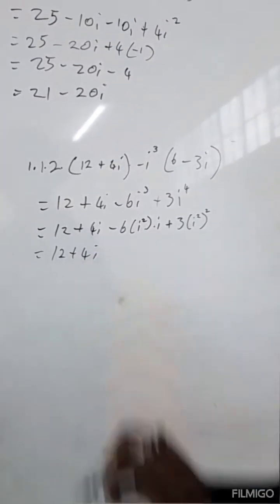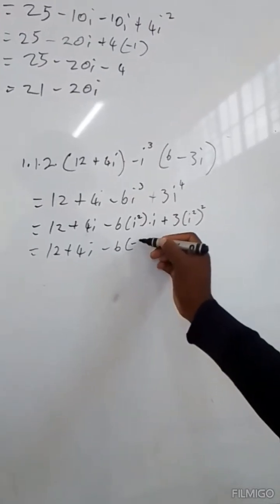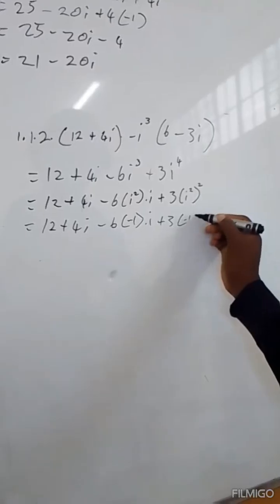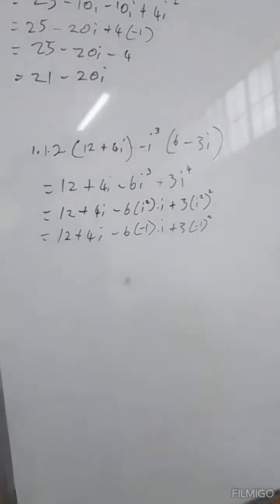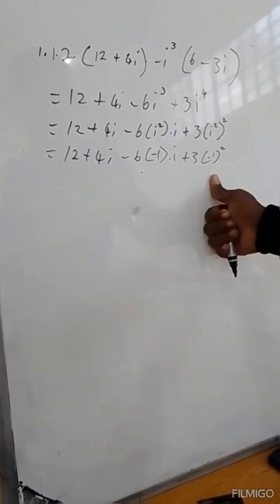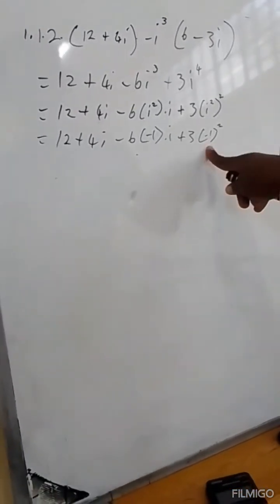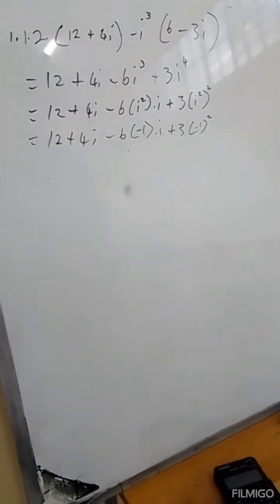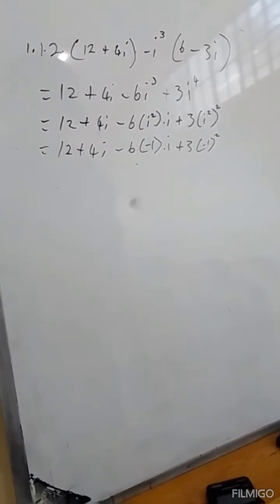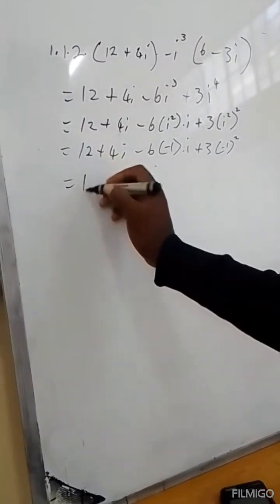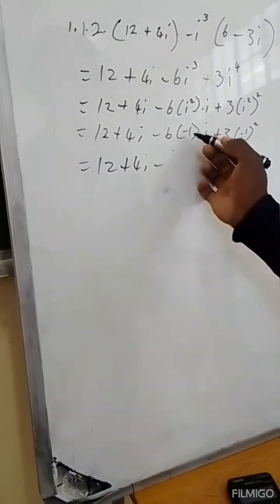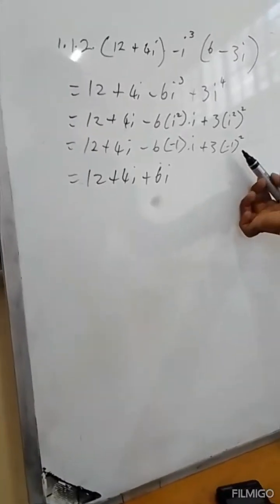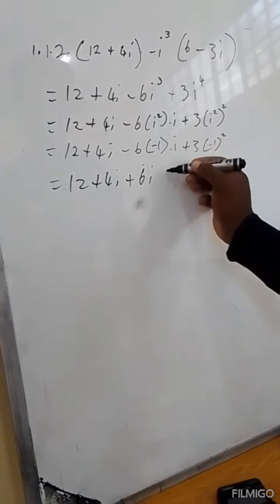So the following step is: 12 plus 4i, minus 6 times (negative 1) times i, plus 3 times (negative 1) squared. Therefore, you punch negative 1 to the exponent 2 on the calculator. It will be equals to 12 plus 4i, minus negative 6 times negative 1 is positive 6 times i, and negative 1 to the exponent 2 is positive 1, which gives plus 3.